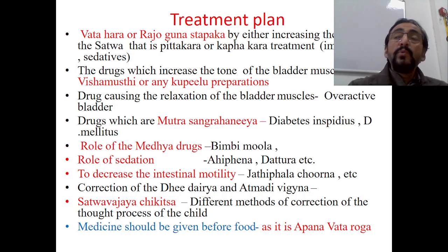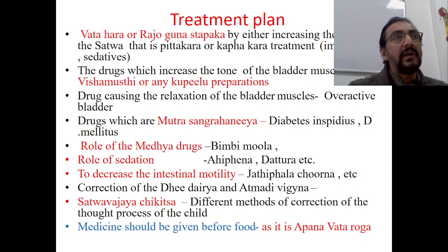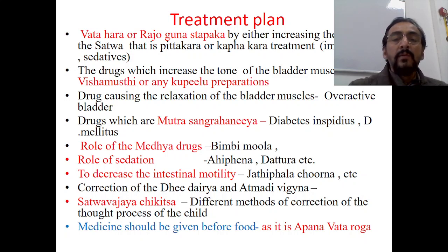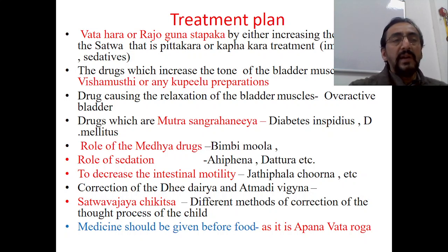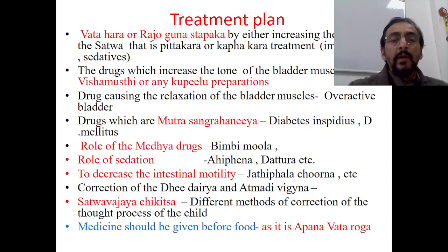Nocturnal polyuria causing Shaiya Mutra can be treated by Mutra Sangrahaniya drugs — whether it is diabetes insipidus, diabetes mellitus, or nocturnal polyuria. There is also a definite role for Medhya drugs because psychological factors and the brain are directly involved. We can use Bimbi Moola, Sarasatharishta, Ashwagandharishtam, or other Medhya drugs. There is also a role for mild sedation, so drugs like Ahifena can be given in carefully calculated doses.